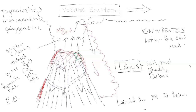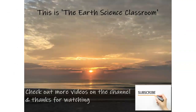So there we have it — all the different features that can happen or have happened with various eruptions. Some eruptions have just lava, some just an ash cloud, and some have everything — like the poor people in Pompeii, or those around Tambora or Krakatoa. Yellowstone might blow in the future, and that would be horrific if you were nearby. This is the Earth Science Classroom — thank you for watching, check out more videos on our channel, and don't forget to subscribe.